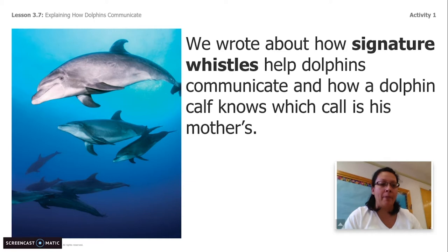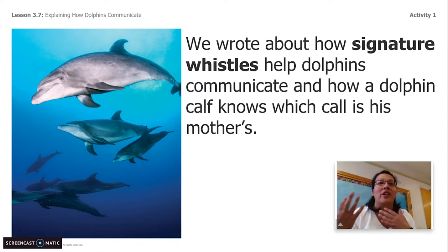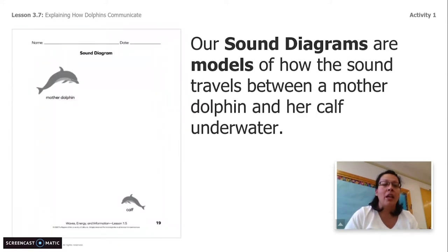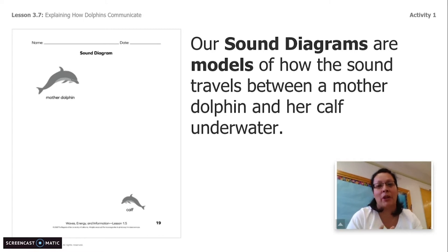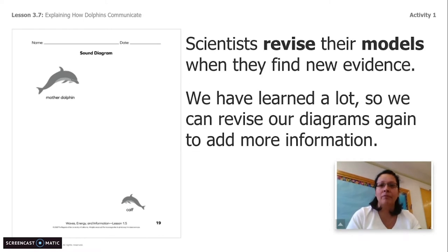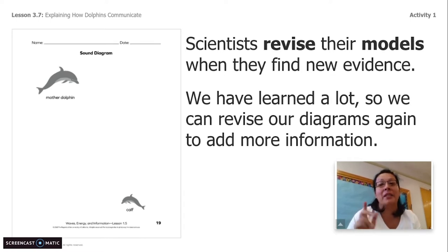So in our last lesson, we wrote about how signature whistles help dolphins communicate, and how a dolphin calf knows which call is his mom's call versus an auntie's call, his grandma's call, or another mother's call in the pod. He knows exactly which whistle is his mom's. Scientists use models to show their ideas about how something works or why something happens. So in the very beginning of this unit, you had a sound diagram and you had to figure out how sound travels between a mother dolphin and her calf underwater. Scientists revised their models when they found new evidence, and we certainly have had a lot of new evidence since chapter one, so we need to go ahead and revise our diagrams to add way more information.